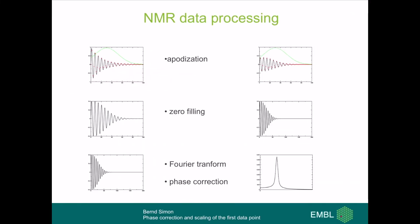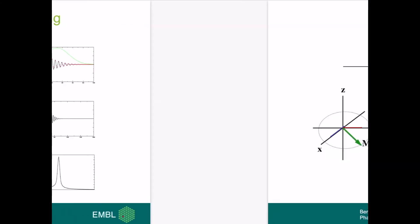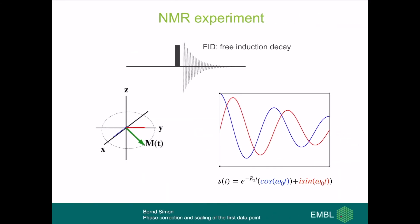The steps of NMR data processing include the multiplication with a window function, followed by adding zeros at the end of the recorded data, then a Fourier transformation, and finally the phase correction — the topic of this short contribution. During NMR experiments, we excite the magnetization, which then starts precessing in the transverse plane and we measure the precessing signal in the free induction decay.